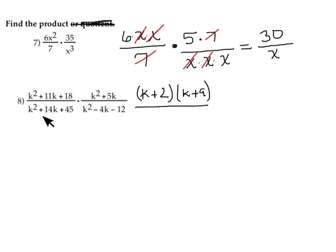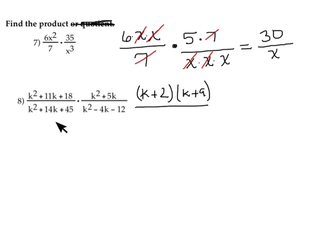Next, let's look at the denominator: k squared plus 14k plus 45. I want factors of 45 that when added give me 14. That's simple — 9 times 5 is 45 and 9 plus 5 is 14. So my factors are k plus 5 times k plus 9. We're breaking it apart so we can see what we can eliminate.